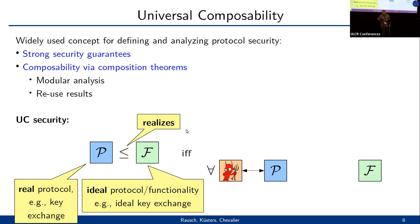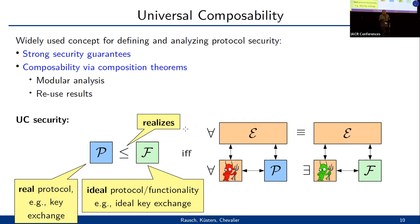If for all possible attackers attacking the network of P, we can construct an ideal attacker or simulator attacking the network of F such that no environment can distinguish both cases, where the environment essentially subsumes arbitrary concurrent protocols.